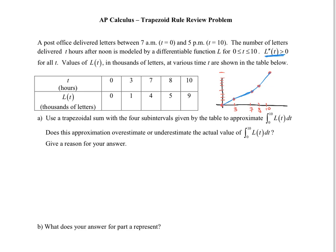Since it is increasing and the second derivative is greater than 0, it's concave up. So that means I can just quickly connect these with something that's going to look like this. It says use a trapezoidal sum with four subintervals given by the table to approximate the integral from 0 to 10 of L of t dt.